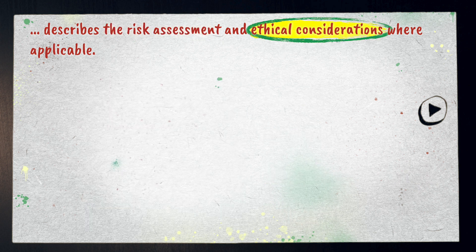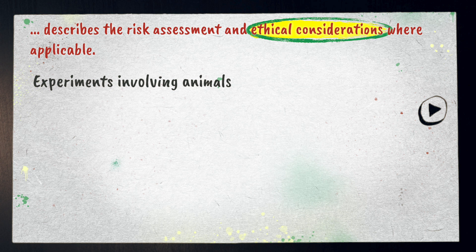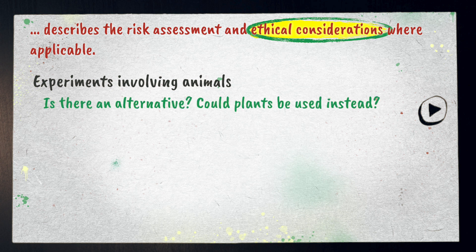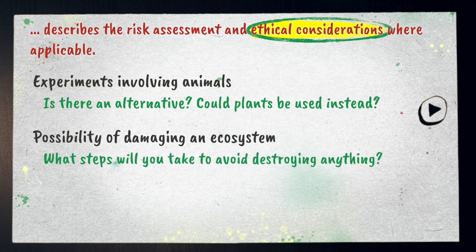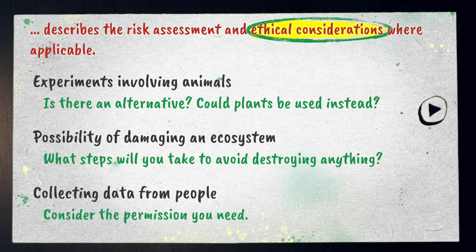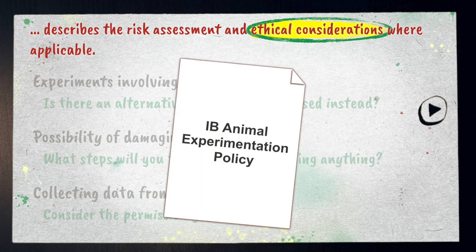There are a few reasons why you might need to take ethical considerations into account. If you have experiments involving animals, consider whether there is an alternative — could plants be used instead? If there's a possibility of damaging an ecosystem, discuss the steps you'll take to avoid destroying anything. If you're collecting data from people, consider the permission you need from them. It's important that you review the IB animal experimentation policy and comply with it.